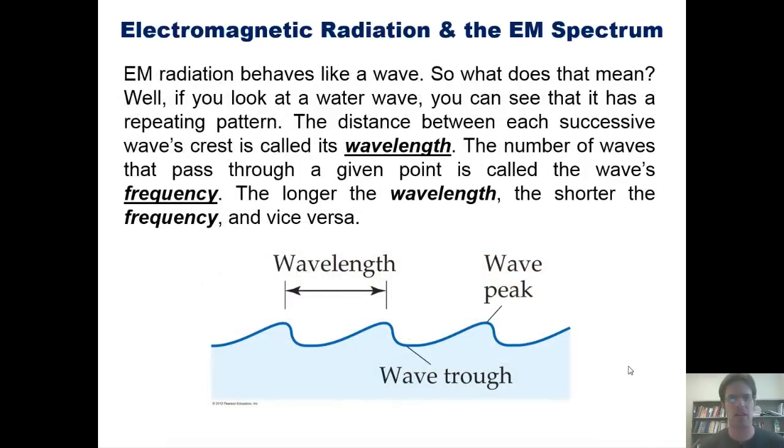So EM radiation behaves kind of like a wave. What does that mean? Well, if you look at a water wave, you can see that it has a repeating pattern. The distance between each of the crests from one wave to the next is called its wavelength. The number of waves that pass through a given point is called its frequency. The longer the wavelength, the shorter the frequency and vice versa.